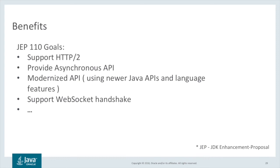There are a number of benefits that application developers can get from using the new HTTP client, and we'll take a look at the most significant of these over the next number of slides. Here are some of the goals that are listed in JEP 110: support for HTTP 2, of course, as well as HTTP 1.1; provide an asynchronous API so as to get away from the blocking semantics of the existing URL connection; use more modern language features like generics and lambda; as well as more modern platform APIs like CompletableFuture and the reactive streams interfaces. Additionally, there is support for handling the WebSocket upgrade and a low-level WebSocket API.